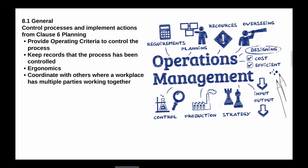Clause 8.1 general looks at how you're going to control the processes that you have, to provide operating criteria to control the processes. You need to retain records that the processes are in fact controlled. You need to consider ergonomics for the man and machine interaction. You need to coordinate with others where a workplace has multiple parties working together. The general overview in Clause 8.1 looks at how you're going to use the various operational controls already identified to make sure that you meet the requirements and the commitments that you've made in your health and safety policy.